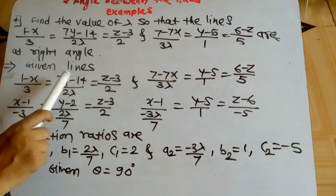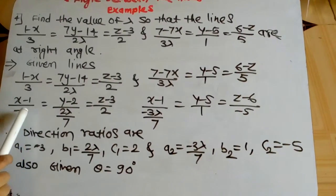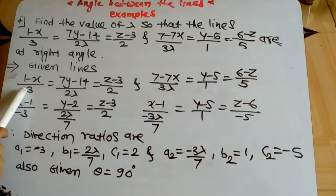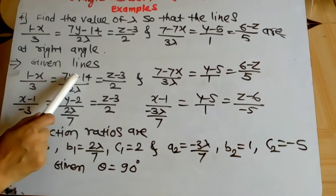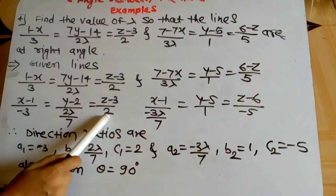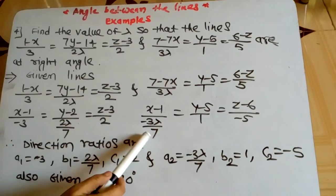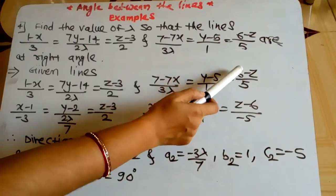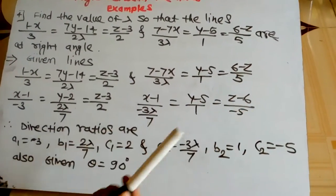Now, the given lines are not in proper form, therefore we convert them into proper form. Taking minus common, that becomes (x-1)/(-3). Take 7 common, divided at the denominator, and (z-3)/2 as it is. Here again, minus 7 take common divided at denominator, (y-5)/1. Here only minus take common: (z-6)/(-5).